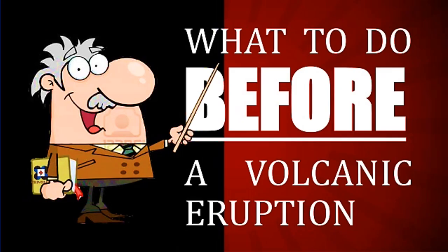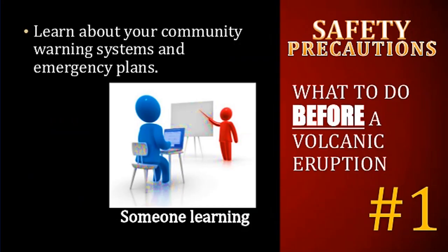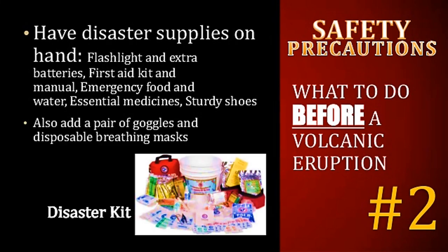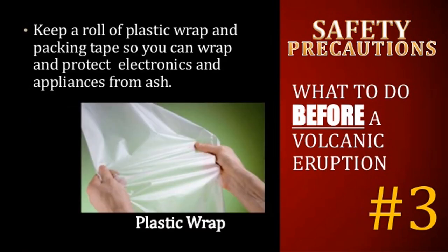What to do before a volcanic eruption? Learn about your community warning systems and emergency plans. Have disaster supplies on hand, like a flashlight and extra batteries, first aid kit and manual, emergency food and water, essential medicines, and sturdy shoes. Also add a pair of goggles and disposable breathing masks. Keep a roll of plastic wrap and packing tape so you can wrap and protect electronics and appliances.